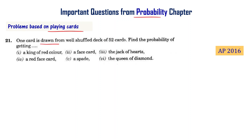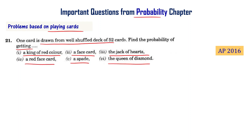One card is drawn from a well-shuffled deck of 52 cards. Find the probability of getting: a king of red color, a face card, the jack of hearts, a red face card, a spade, the queen of diamond.